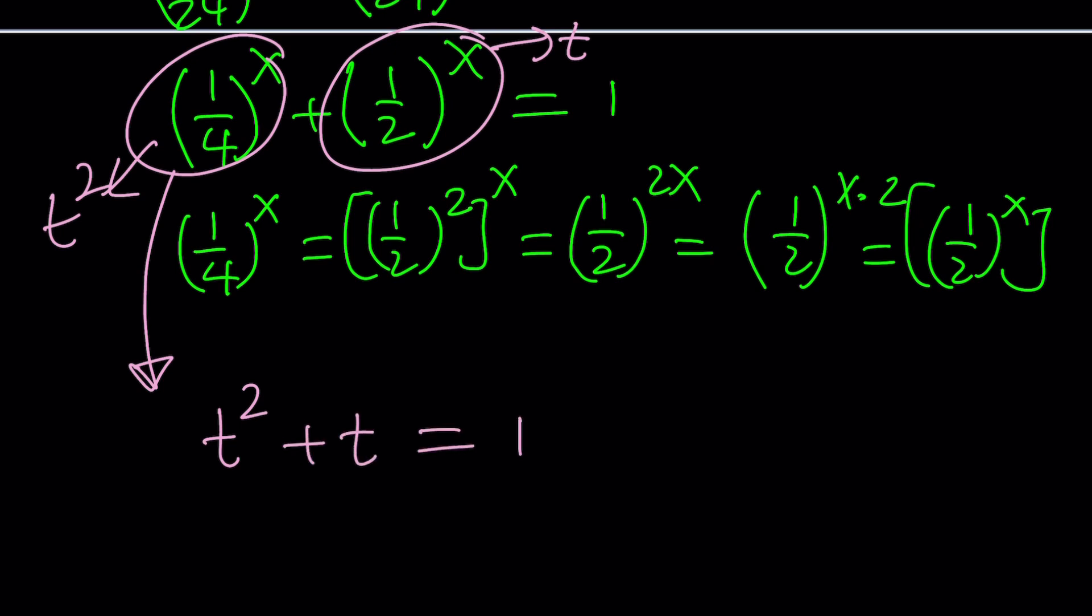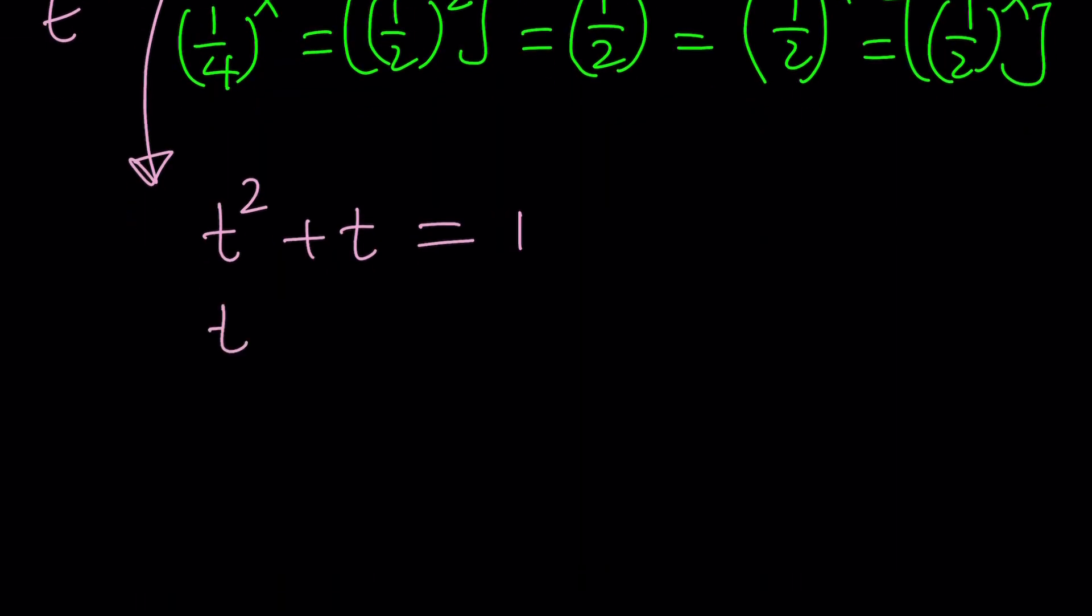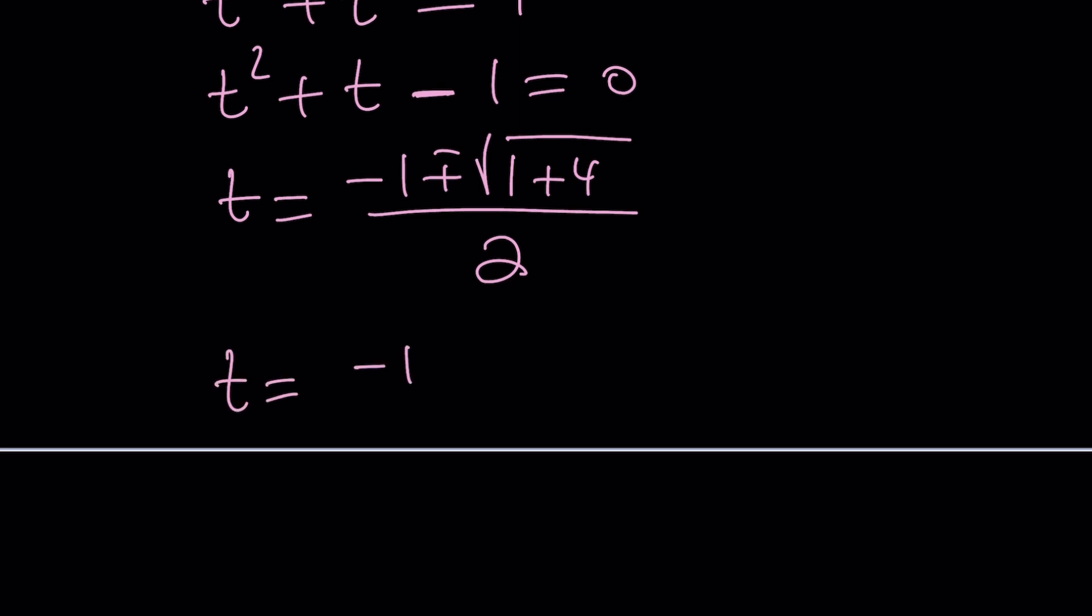And guess what? This equation has real solutions. Let's put everything on the same side and solve this quadratic equation. Maybe you're already smelling the golden ratio. We're going to write the solutions as -b ± √(b^2 - 4ac), which gives us √5. This becomes t = (-1 ± √5) / 2.